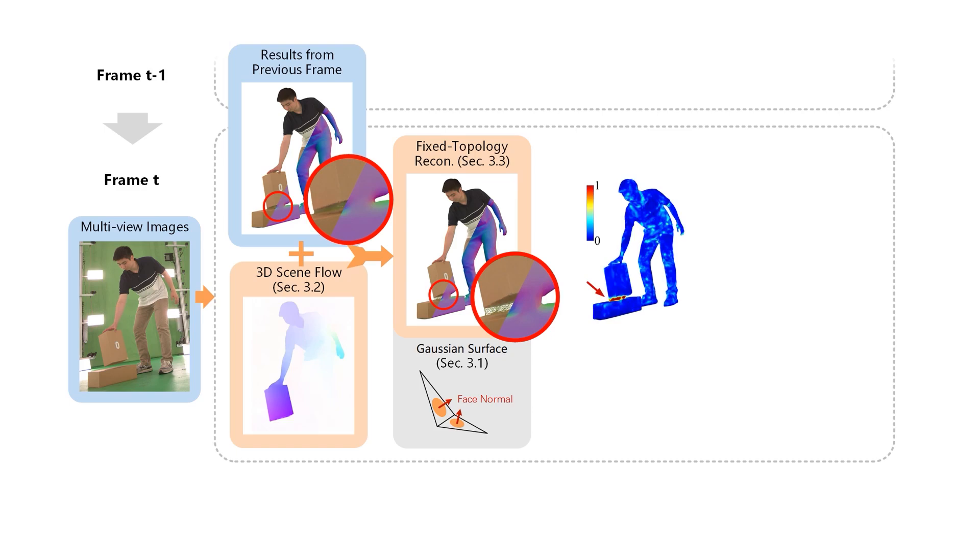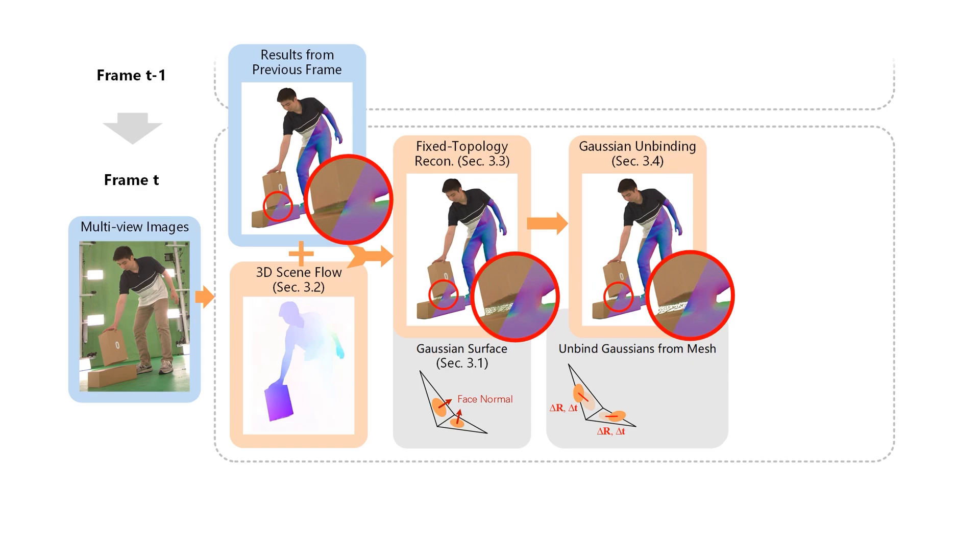To handle topology changes, we first detect them based on positional gradients and reconstruction errors. In these regions, we unbind the Gaussians from their mesh surfaces, allowing them to move more independently. We also introduce additional Gaussians to reconstruct the new surfaces.